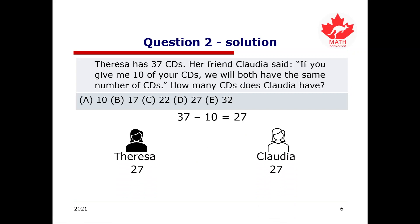But, to be careful, we don't want to jump and say, oh, D is our answer, because we know that this is happening after Teresa gives 10 of her CDs away to Claudia. So, if we want to get the true number of CDs that Claudia owns, we have to subtract another 10 from the 27, which is 17. And this means that Claudia, before any trading goes on, will have 17 CDs. Therefore, we know that our answer will be B, 17.